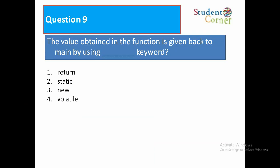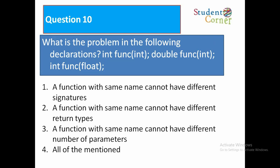The value obtained in the function is given back to main by using which keyword? Option 1: return. Option 2: static. Option 3: new. Option 4: volatile. Option 1, return, is correct. What is the problem in the following declarations — int function(int), double function(int), int function(float)? Option 1: A function with the same name cannot have different signatures. Option 2: Cannot have different return types. Option 3: Cannot have different number of parameters. Option 4: All of the mentioned. This is the correct answer.